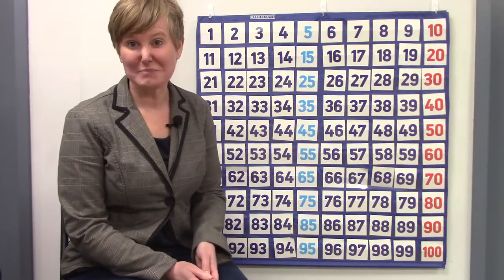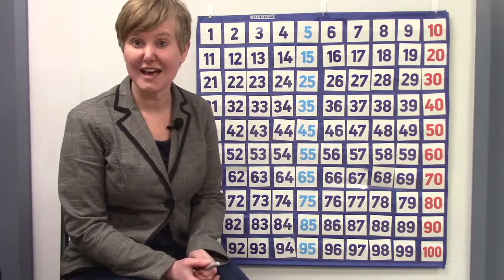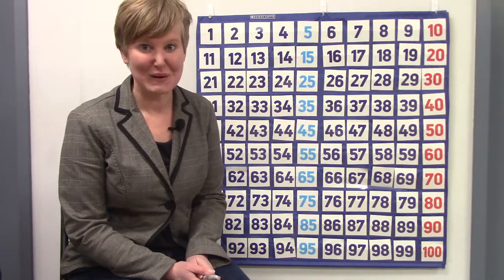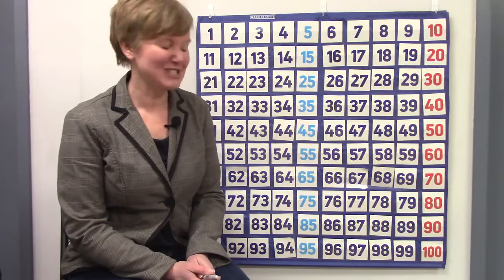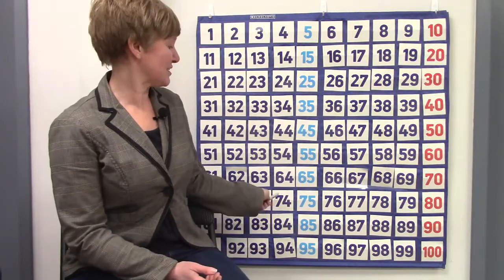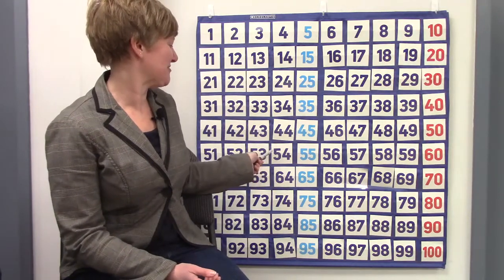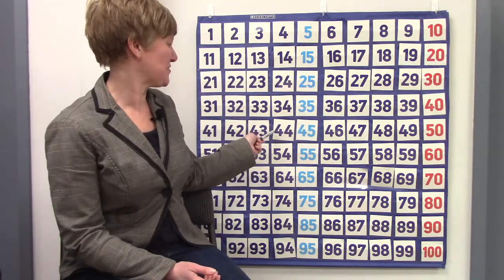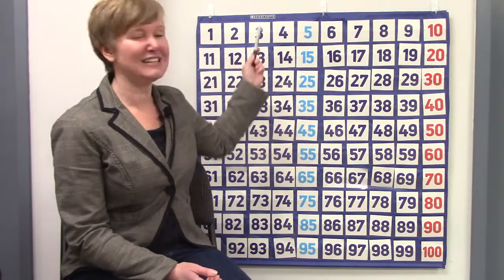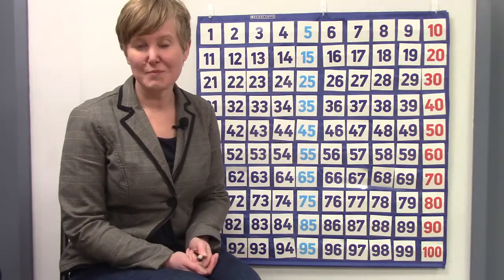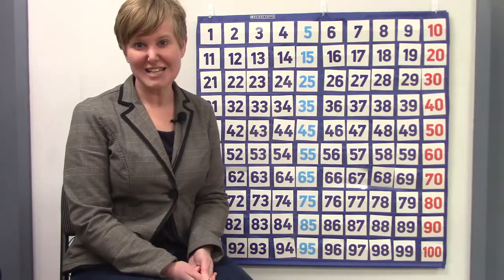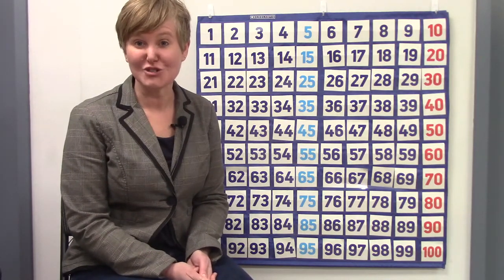When we were counting by 10, we were adding 10 to the number each time. Can you do it backwards? Let's try. 94, 84, 74, 64, 54, 44, 34, 24, 14, 4. When we were counting backwards, we were subtracting 10 from the number each time.